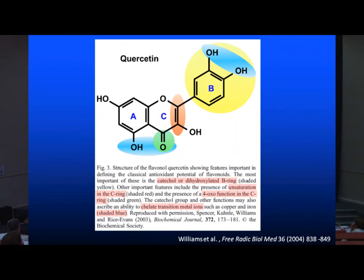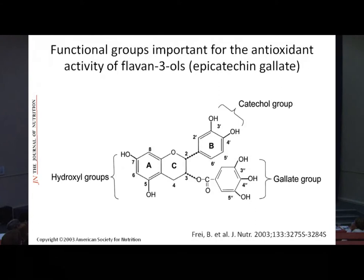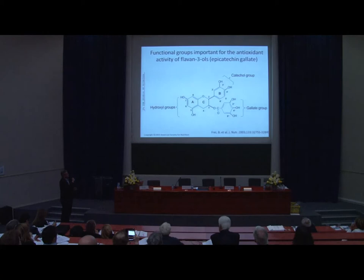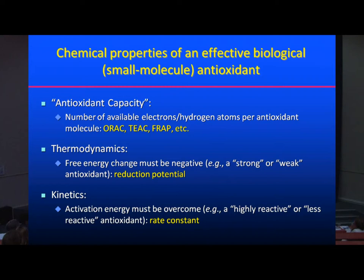In terms of dietary antioxidants, people have looked at molecules like quercetin and identified all different kinds of antioxidant moieties — hydroxyl radical hydrogen donators. Similarly for epicatechin gallate, you have the catechol group, the gallate group, and hydroxyl groups on the A-ring, all of which could act as hydrogen-donating moieties and make these molecules antioxidants. However, we have to consider a number of issues when deciding whether an antioxidant is a good antioxidant. The first is antioxidant capacity — basically the number of available electrons or hydrogen atoms per antioxidant molecule — measurable by assays such as ORAC, TEAC, and FRAP.